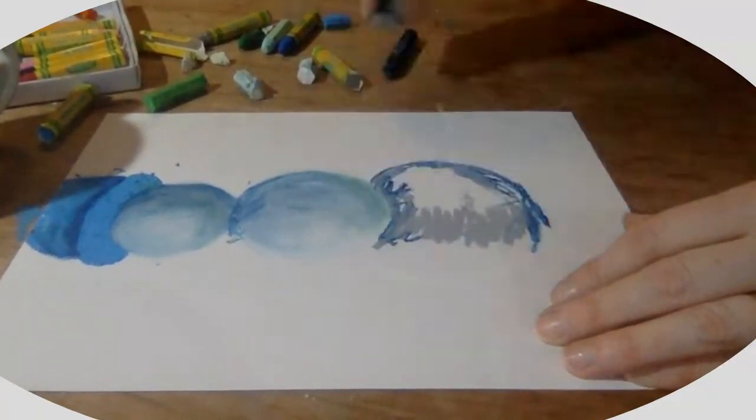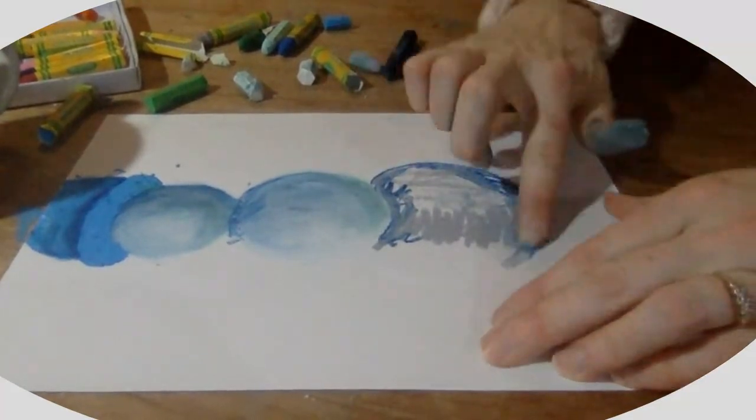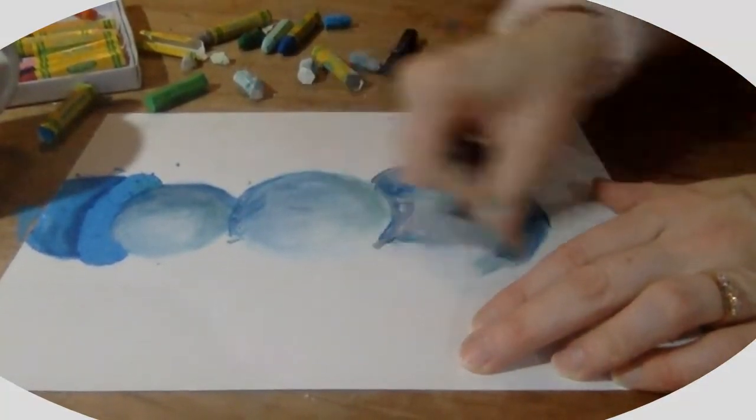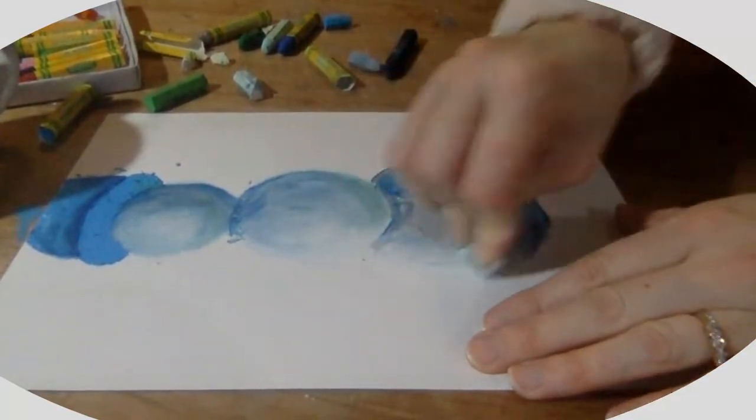I use the darker on the bottom because that's where the least amount of sunlight is going to be. You can do yours as light as you'd like.